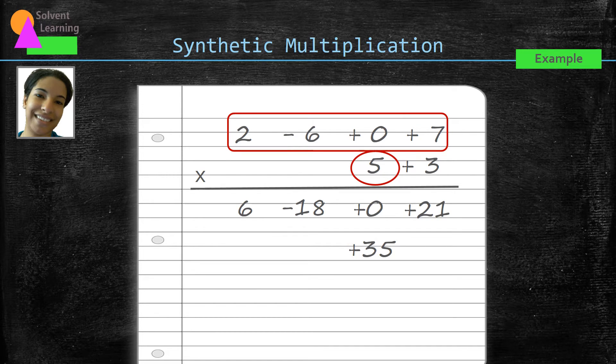Each time you start a new row, you have to move one space to the left. So same process here. Now we can continue. Five times zero gives us zero. Five times negative six gives us negative 30. And then five times two gives us 10.